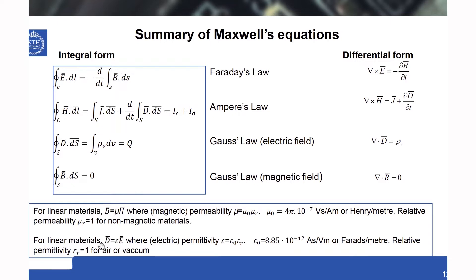For linear materials, D equals epsilon times E, where epsilon is the electric permittivity, given as epsilon_0 times epsilon_r. Epsilon_r is the relative permittivity, which is a unitless number. Epsilon_0 has units of ampere-seconds per volt-meter, or farads per meter. Relative permittivity is one for air or vacuum, and greater than one for other dielectric materials.